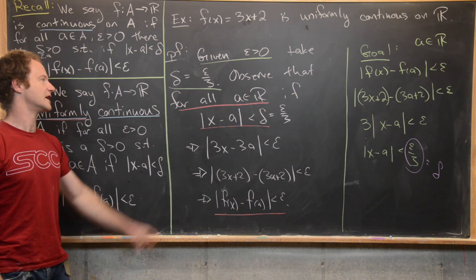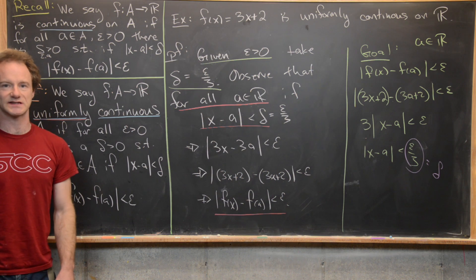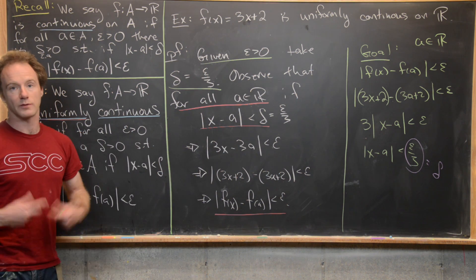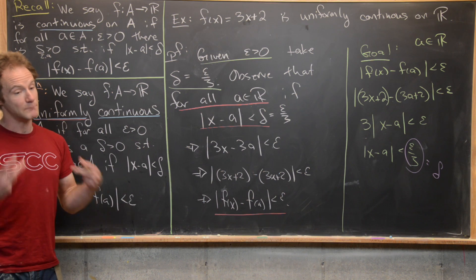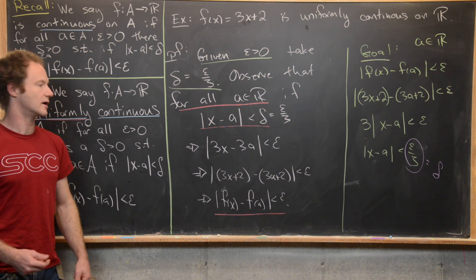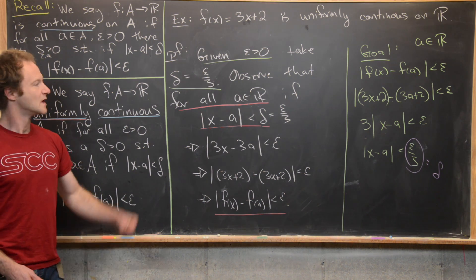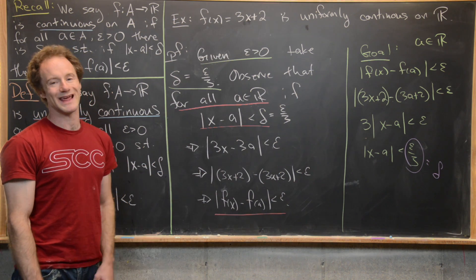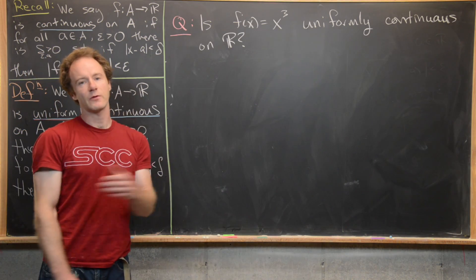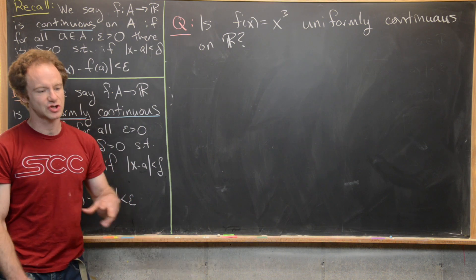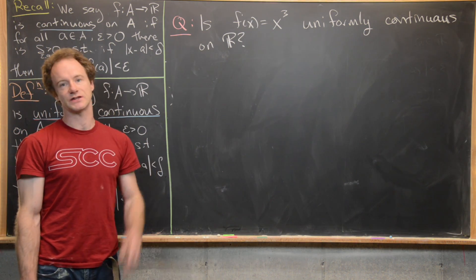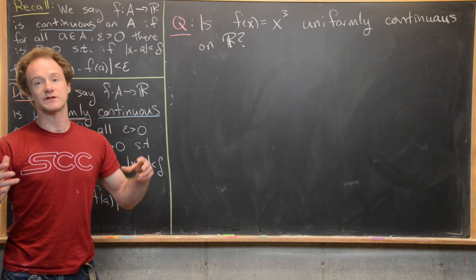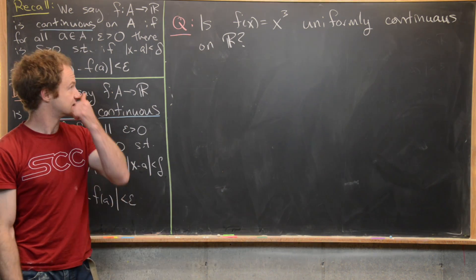The important thing here is we bring this delta into existence before taking an arbitrary real number — that's the most important part about uniform continuity. Now we're going to explore another function which will end up being continuous but not uniformly continuous.